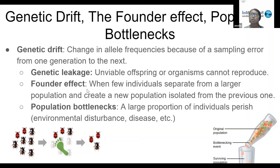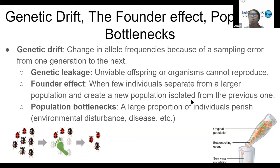There is also the founder effect, which is when a few individuals separate from a larger population and create a new population isolated from the previous one. For example, imagine a population of deer with equal numbers of brown and tan deer, and a few brown deer move away to form an isolated population. Their offspring would most likely all be brown deer, changing the allele frequency from roughly 50/50 to perhaps 75–80 percent of that brown phenotype.